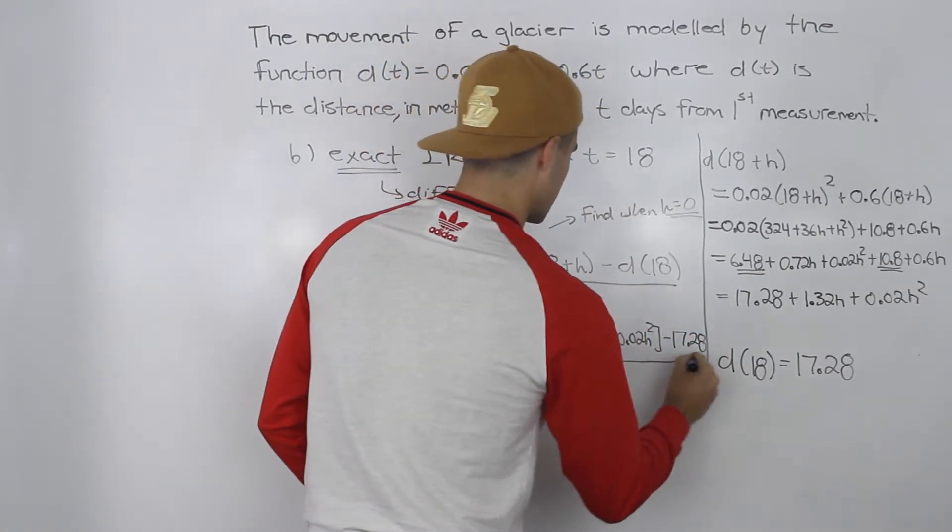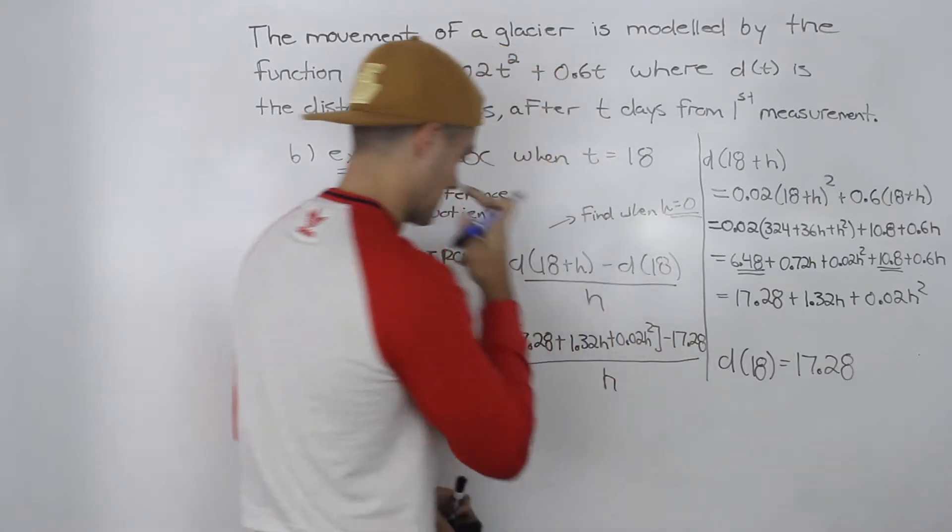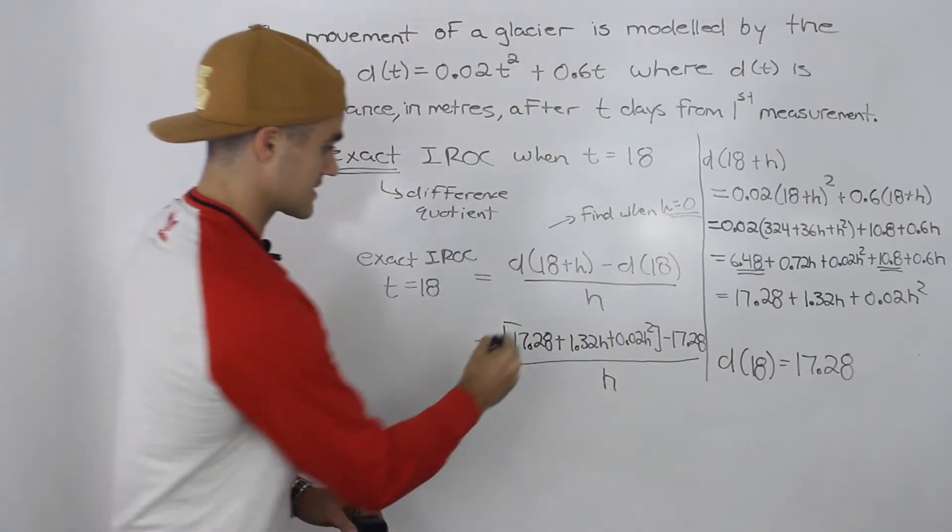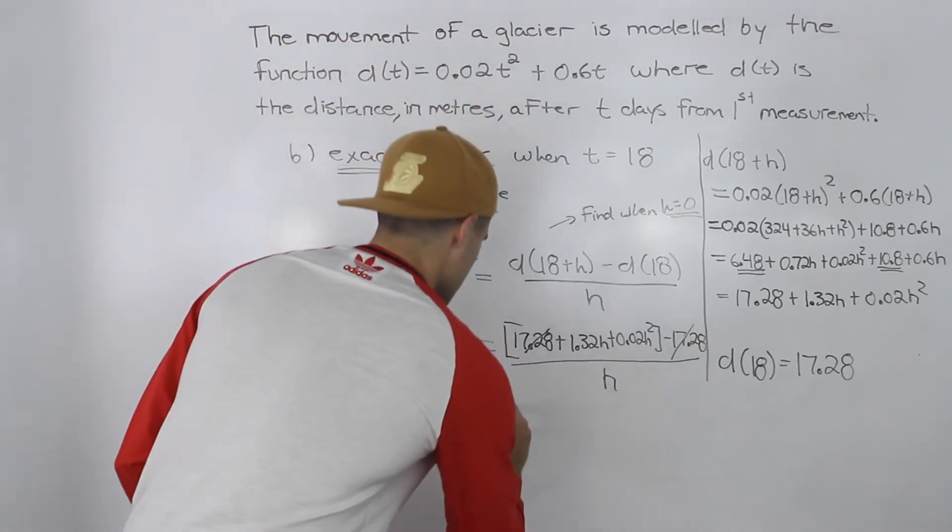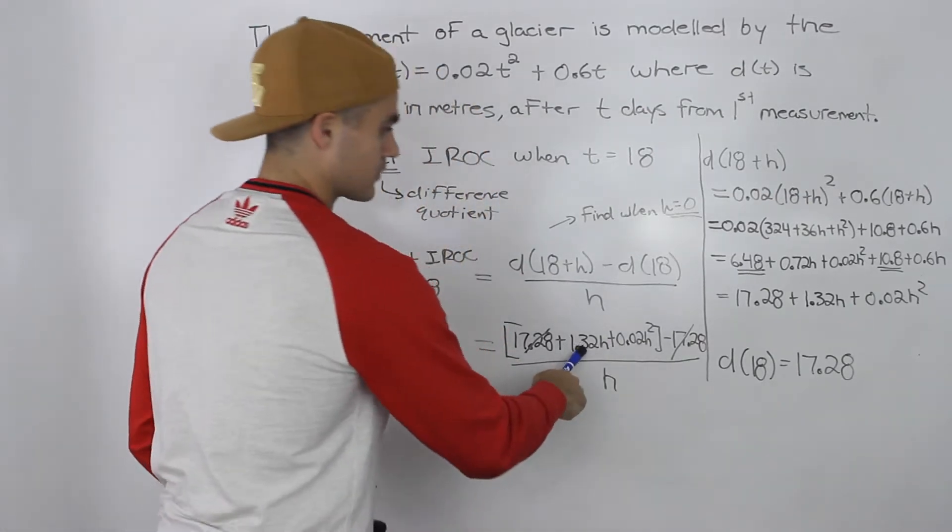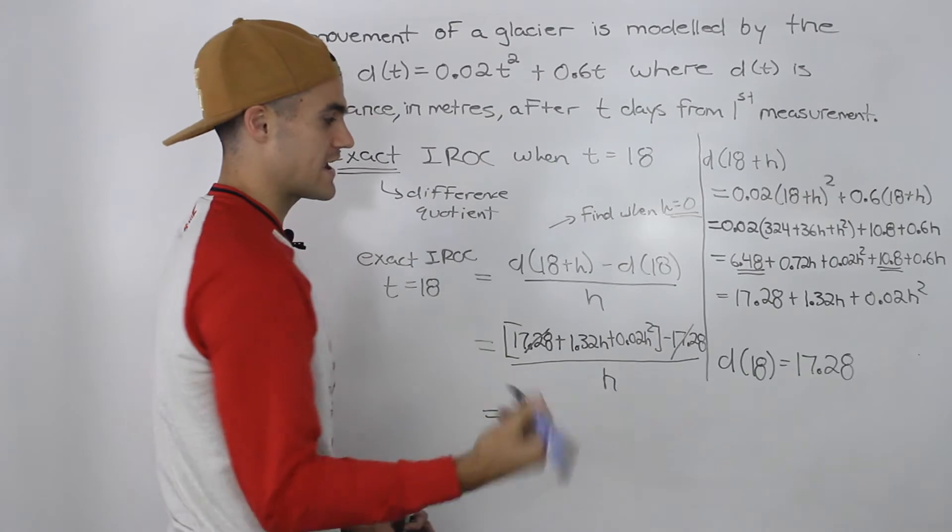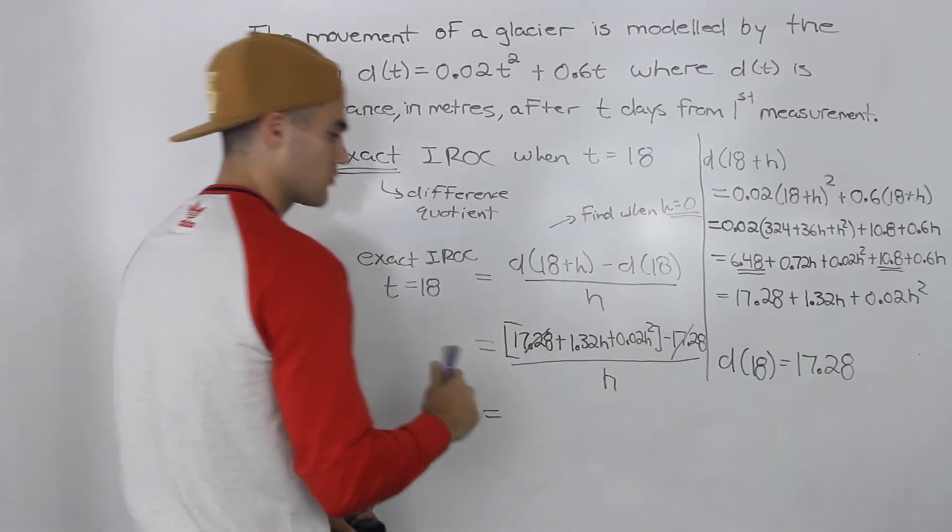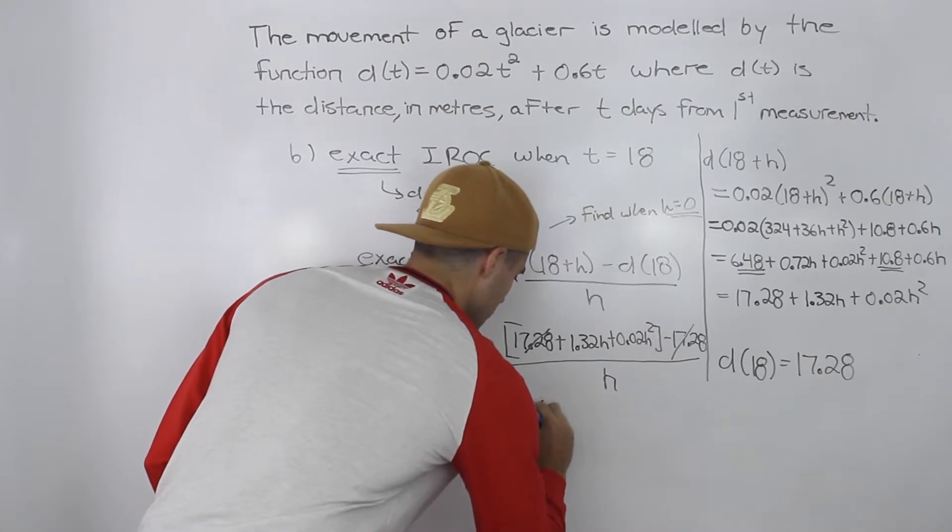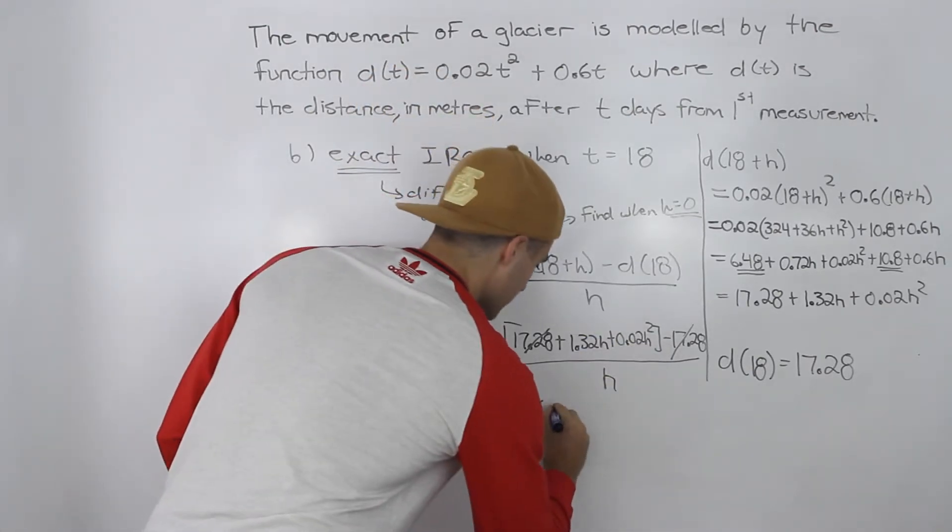Notice how the 17.28 will cancel out, so we're left with 1.32h + 0.02h². What we want to do is factor out an h from the numerator.